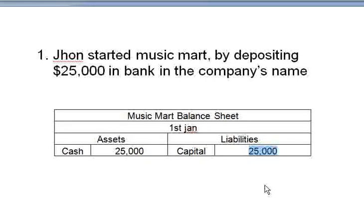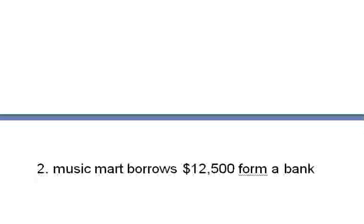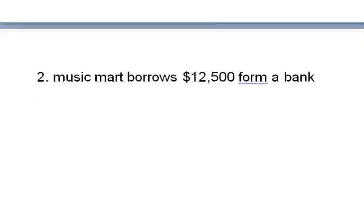Apart from the initial investment of twenty-five thousand dollars given by John, Music Mart also thinks it needs more money, so it goes to a bank and gets twelve thousand five hundred dollars as a loan. Since it borrows, how do you record this? Since it's a loan, it is a liability on Music Mart, so it is recorded on the right side.